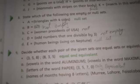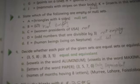Question number eight: state which of the following are empty or null set. As we know that null set is that set which does not contain any element. In part B, we have B is equal to